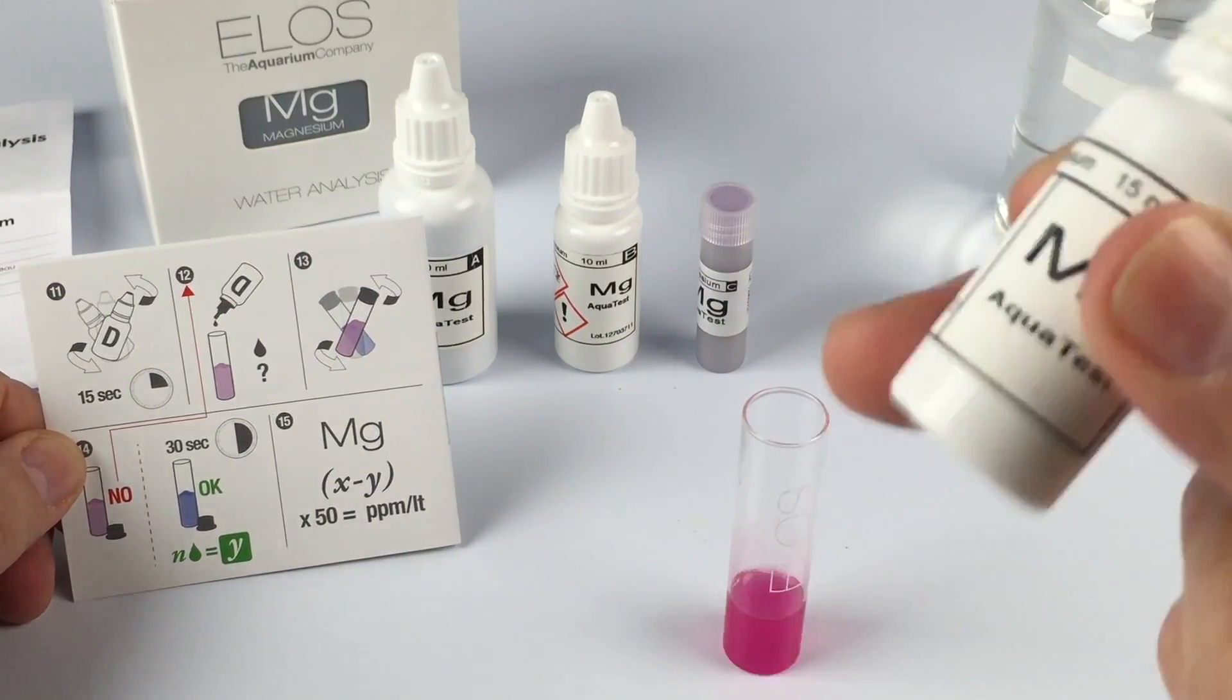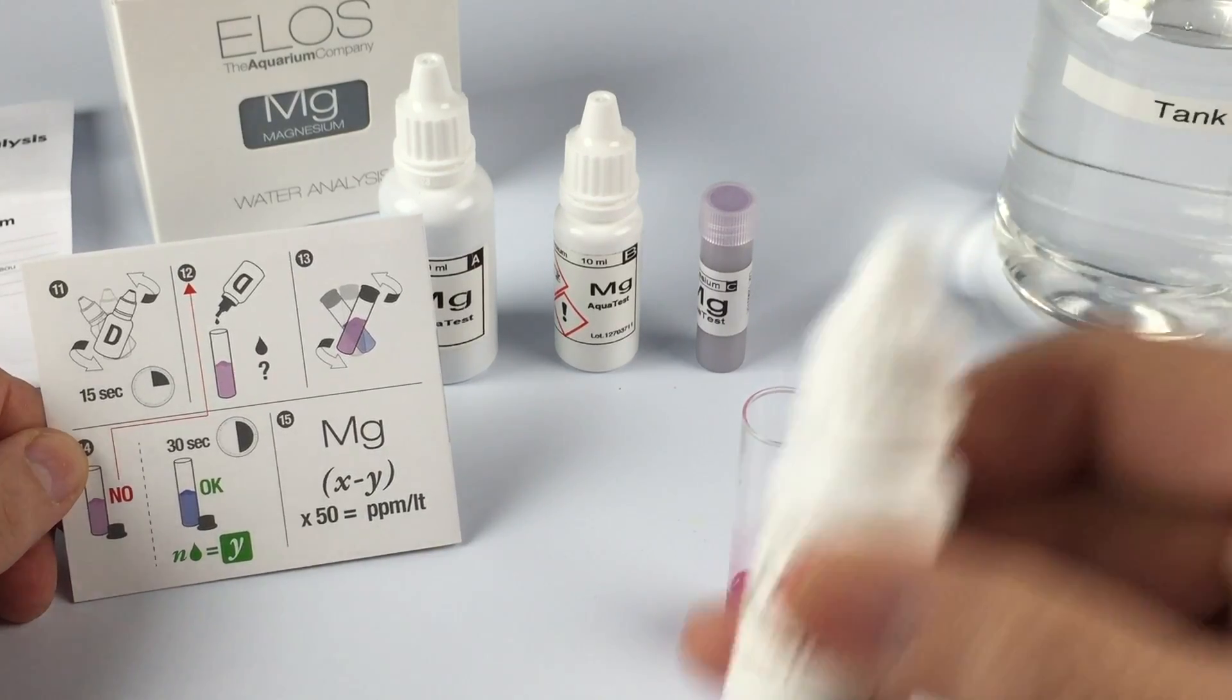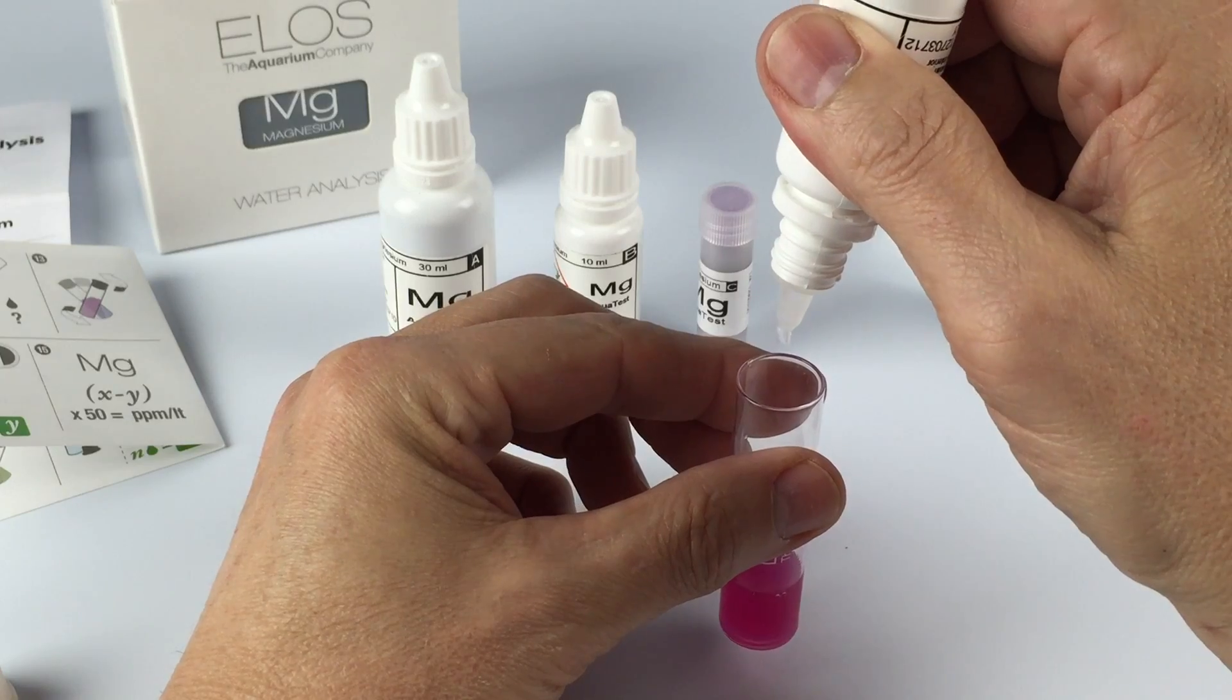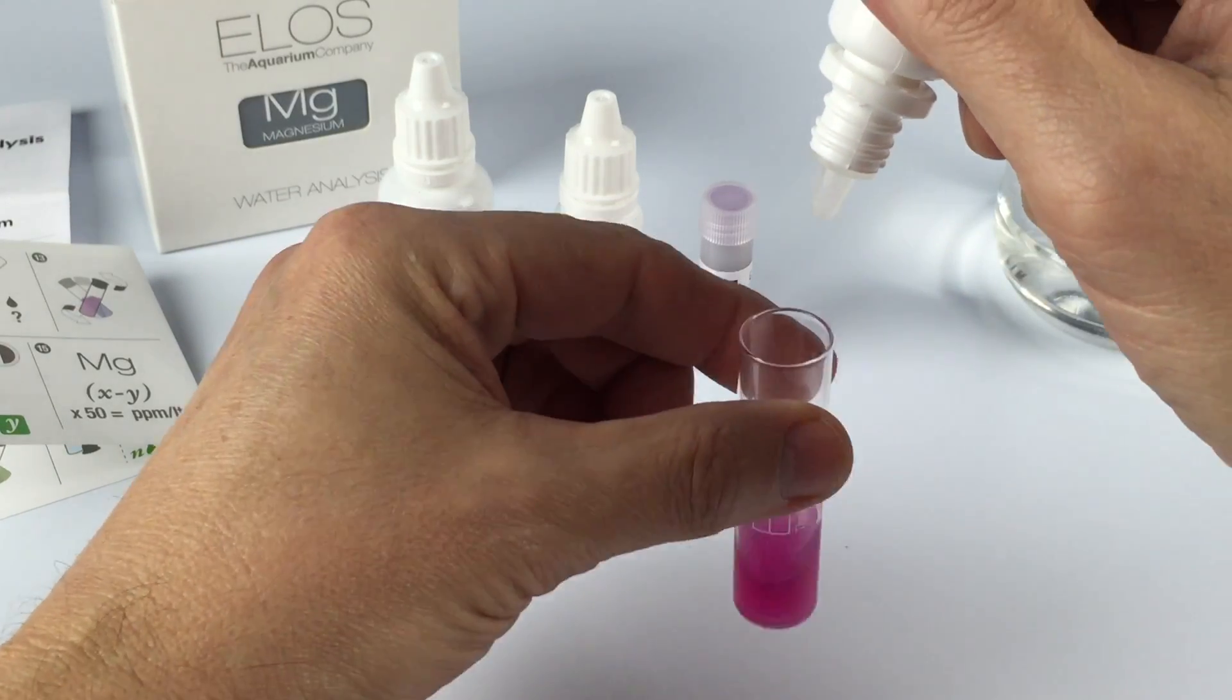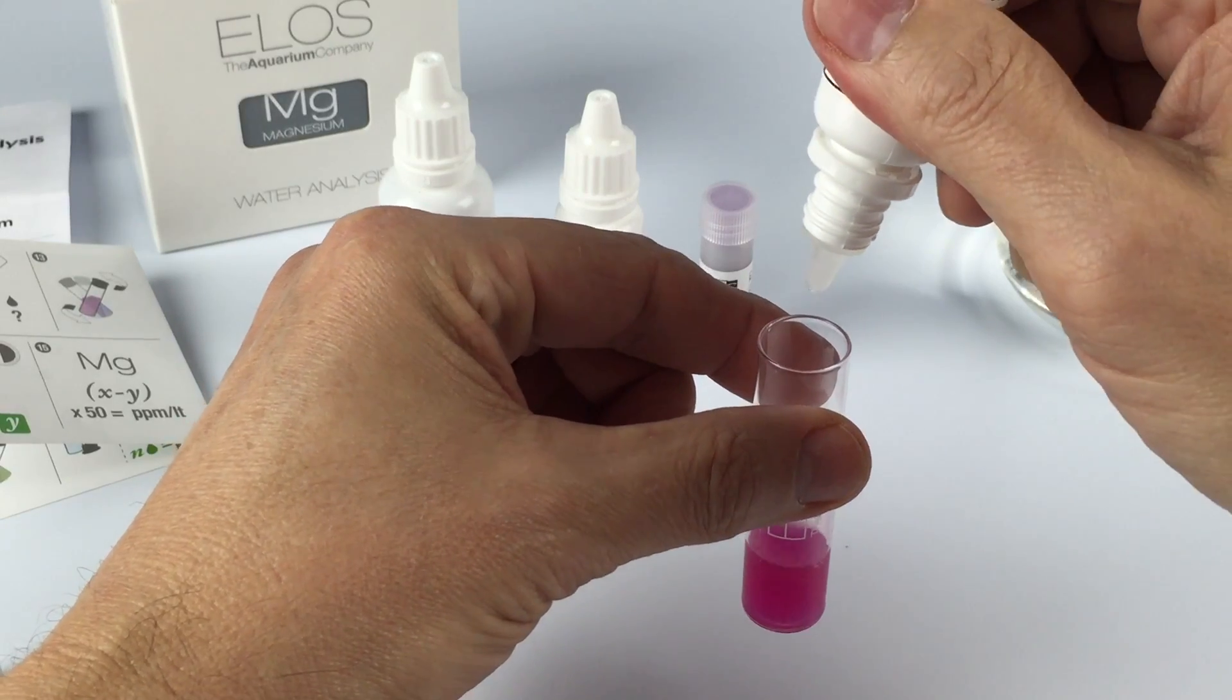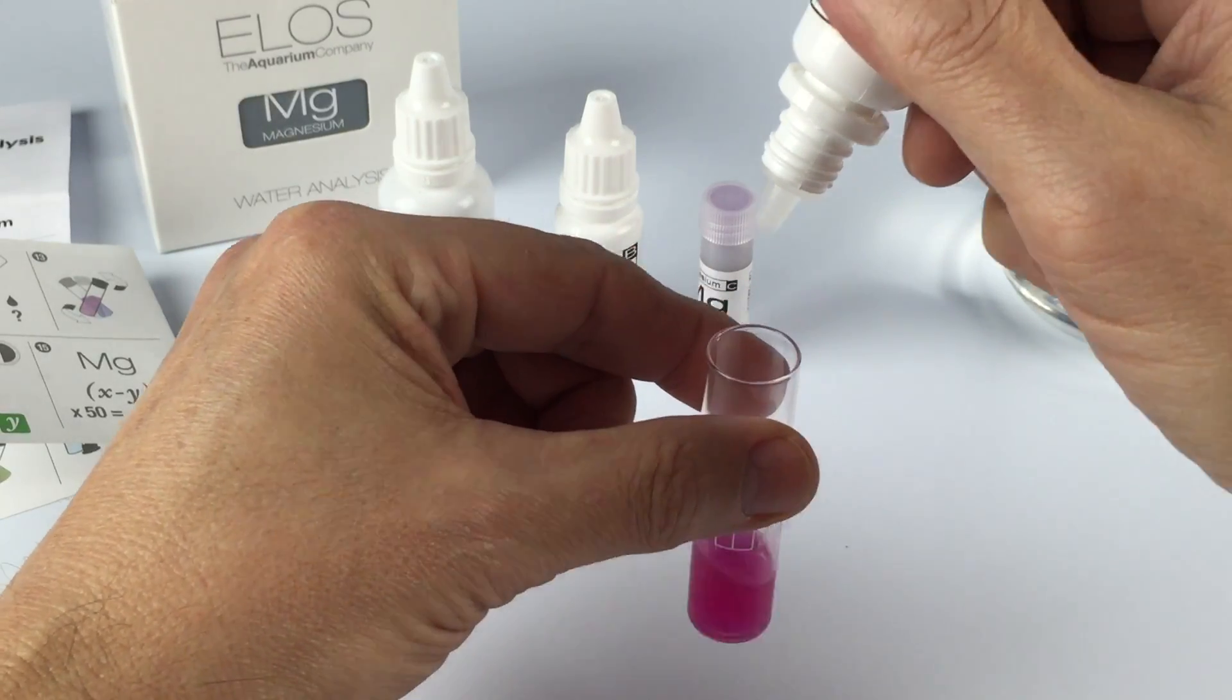Shake Part D for 15 seconds. Lastly, we're going to add one drop at a time, shaking the vial and keeping track of how many drops we use. In this case, it took me five drops to turn the solution from pink to blue.